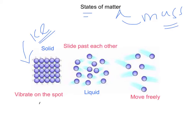Whereas if we add even more heat, that liquid water is going to turn into a gas. In a gas, you're going to have a lot of movement. These particles move freely, which means they just move from place to place without any restrictions.